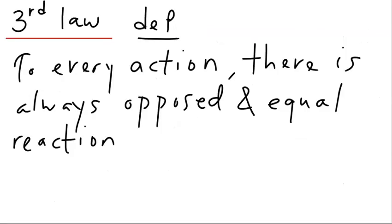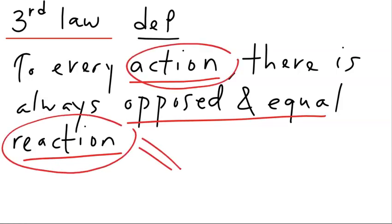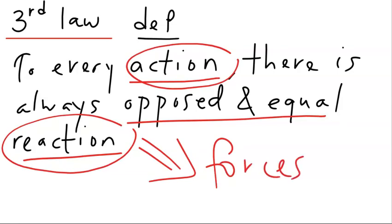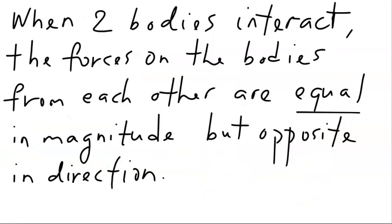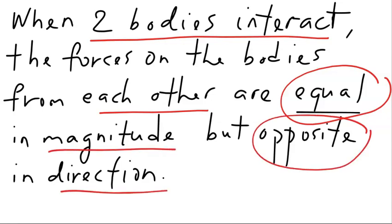Now let's look at the third law. Newton's third law of motion states: to every action there is always an equal and opposite reaction. Action and reaction are forces. They are equal in magnitude but opposite in direction. When two bodies interact, the forces on the bodies from each other are equal in magnitude but opposite in direction.